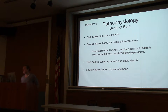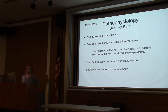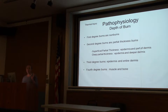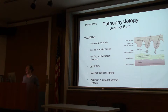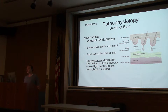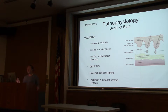First-degree burns are sunburns — clinically irrelevant. Second-degree burns are partial thickness burns divided into superficial partial thickness, involving the epidermis and more superficial dermis, and deep partial thickness, involving the epidermis and deeper dermis. Third-degree burns involve the entire epidermis and dermis. Fourth-degree burns involve structures deep to that: muscle, skin, and bone.